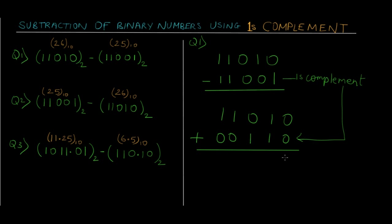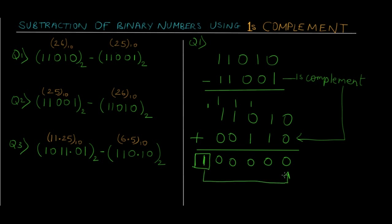Now we add these two numbers. Adding 11010 and 00110: zero plus zero is zero, one plus one gives zero with a carry of one, one plus one again gives zero with carry, zero plus one with carry gives zero with carry, and lastly we get zero with one carry — an extra bit. When you get this extra carry, it means the result is going to be positive. We take that carry and add it back to the result.